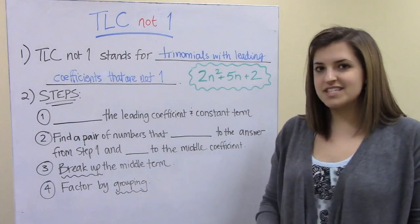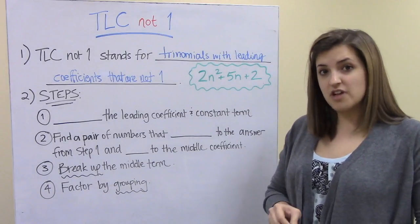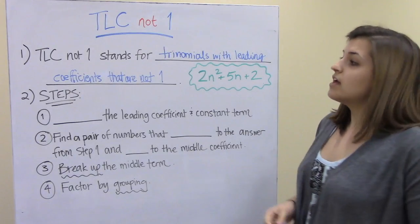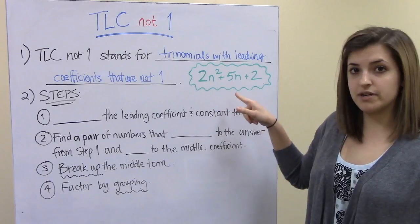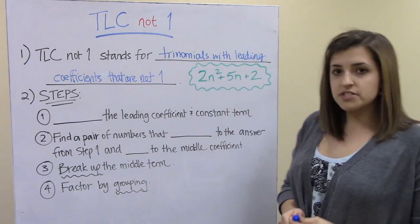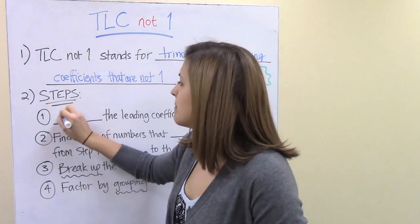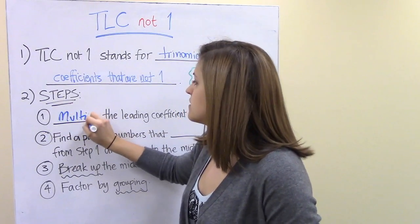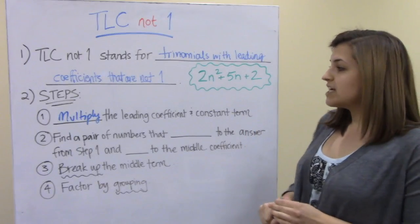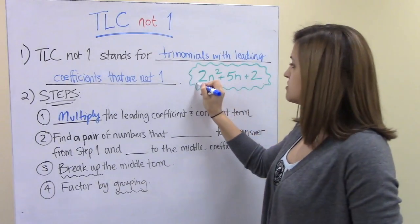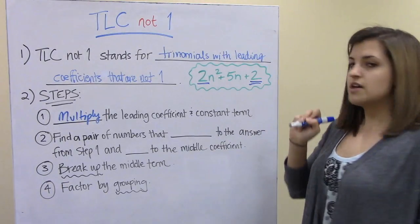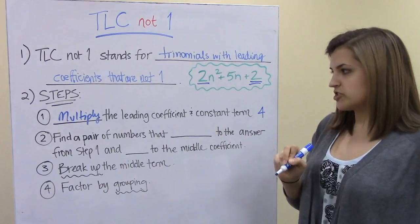The steps we need to follow for solving these types of trinomials are a little bit different from the ones we solved before. Using the example 2n² + 5n + 2, our first step is to multiply the leading coefficient and the constant term. The leading coefficient is 2 and the constant term is 2, so 2 times 2 equals 4.